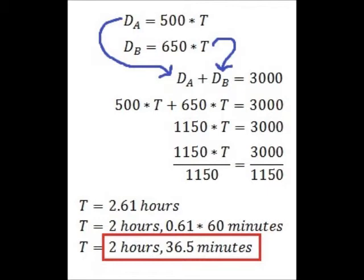There are many ways to solve systems of equations, as you have probably already learned. You could sum the first two equations to get D_A plus D_B on the left, then substitute the left side with 3,000 and solve for T. Or, as we are going to do, you can substitute D_A and D_B into the third equation and solve for T.